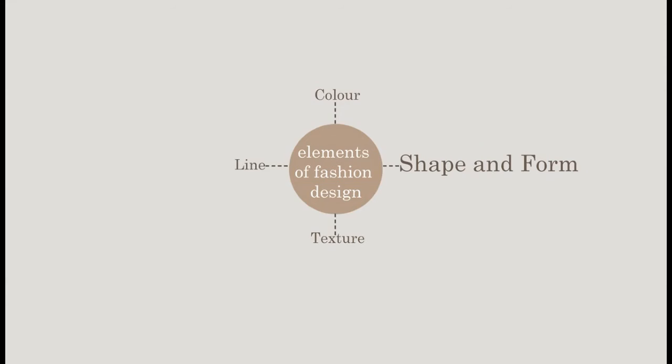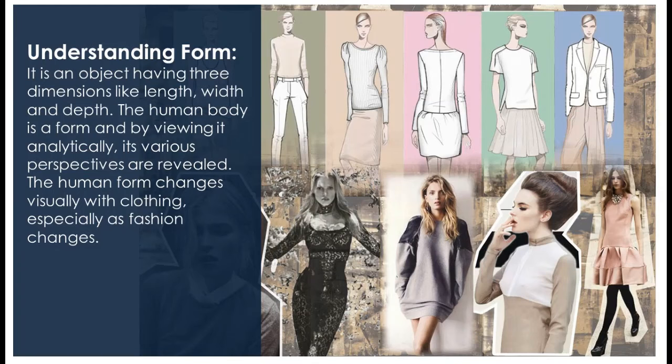In this chapter we are going to discuss shape and form, which are one of the most important elements of design. First of all, we have to understand form. Form is an object having three dimensions: length, width, and depth. The human body is a form, and by viewing it analytically, its various perspectives are revealed. The human form changes visually with clothing, especially as fashion changes.